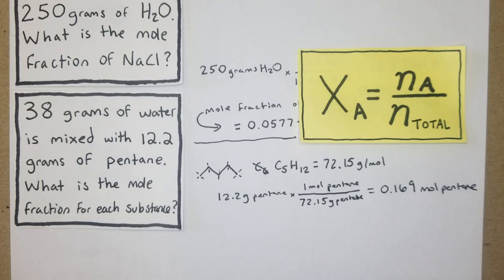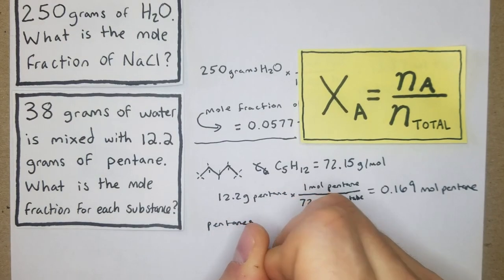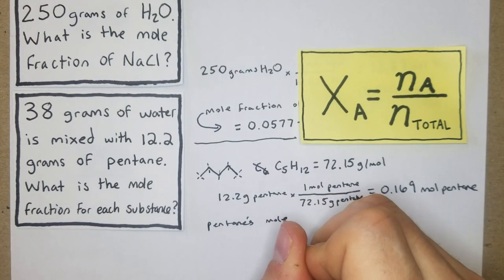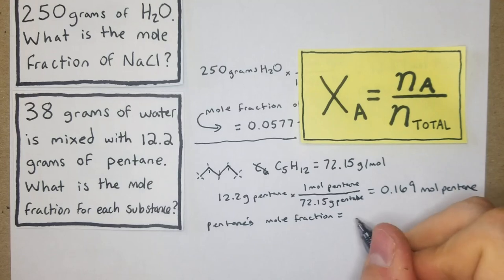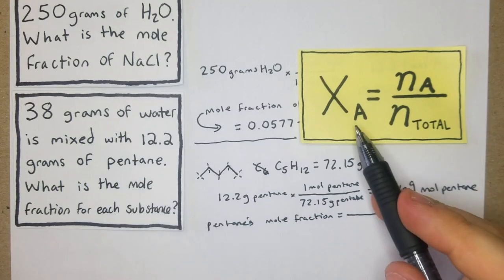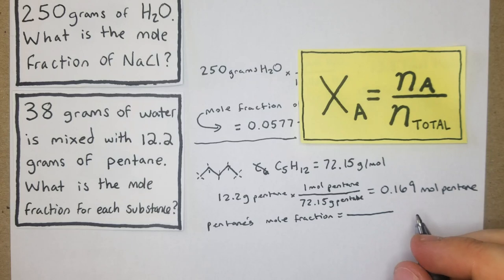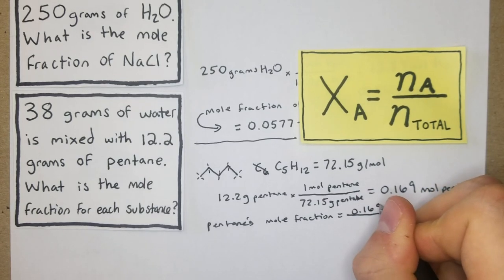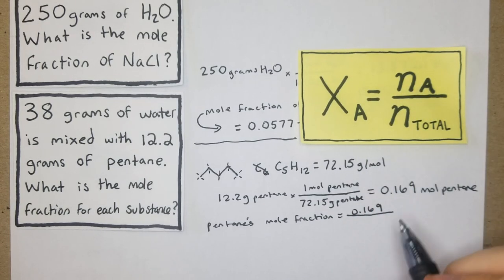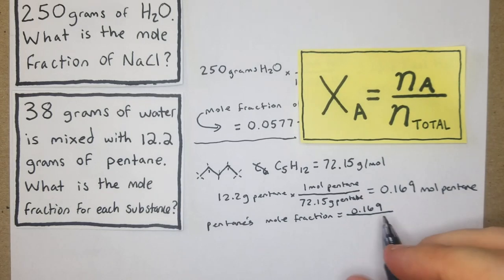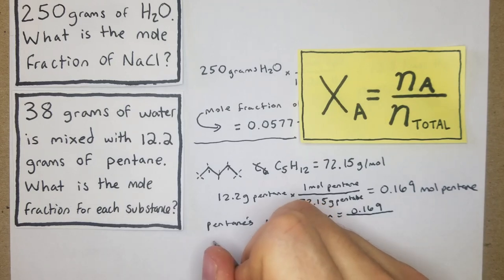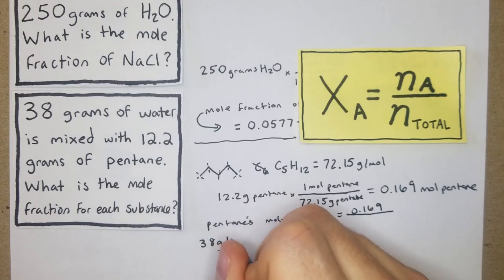Now pentane's mole fraction is going to equal - again we use this formula here - so we have our 0.169 because it's A in this case, and then it's over our total. We have 38 grams of water with that, so for our total right now we technically don't know it, but we can get it really quick by figuring out how many moles of water. We have 38 grams of H2O.